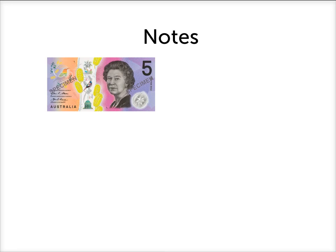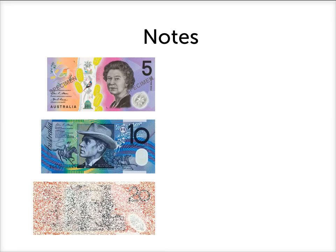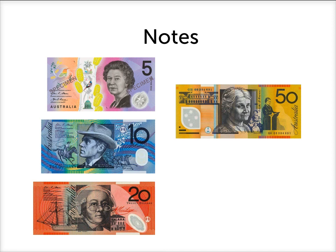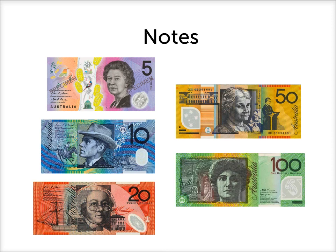Firstly we have notes. Let's go through them all going from smallest to largest. There is a $5 note, a $10 note, a $20 note, a $50 note, and a $100 note. Aside from the numbers on them, you can see that they're all different colors, which can also help you work out which one's which.